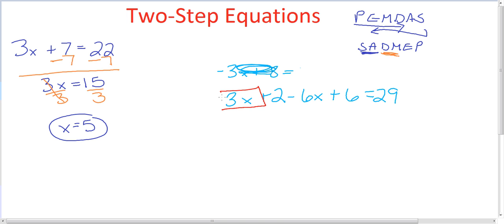We have 3x and negative 6x, which makes it a negative 3x. We have 2 and 6, both positives, that equals 8. And then we're going to have our 29 on that side since it was on the other side of the equal sign.